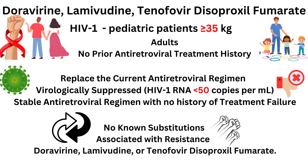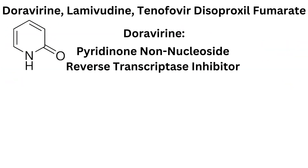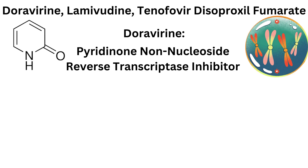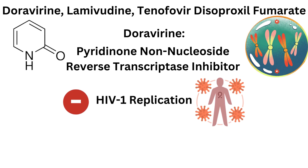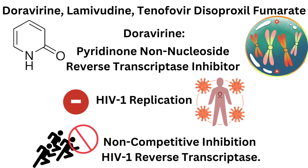Mechanism of Action. Doravirine is a Non-Nucleoside Reverse Transcriptase Inhibitor that inhibits HIV-1 replication by non-competitive inhibition of HIV-1 reverse transcriptase.